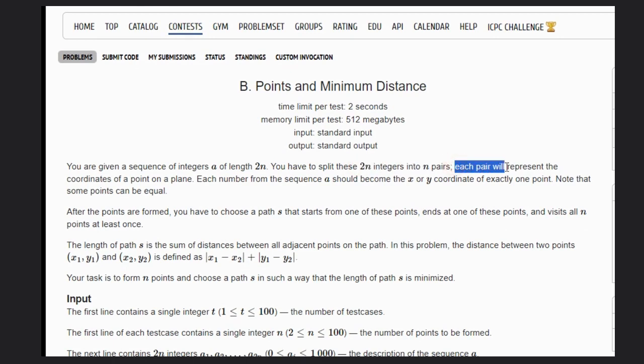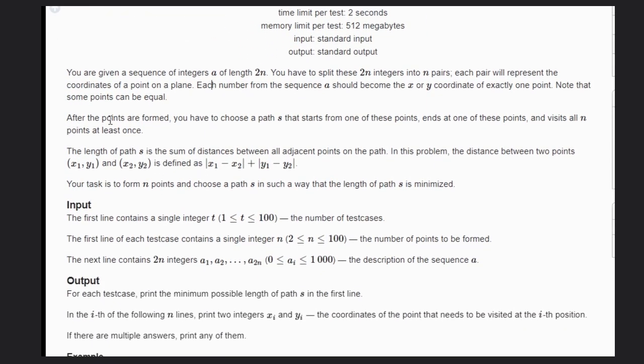Each pair will represent the coordinate of a point on a plane. Each number from the sequence should become the x or y coordinate of exactly one point. Note that some points can be equal. After the points are formed, you have to choose a path that starts from one of these points and ends at one of these points.